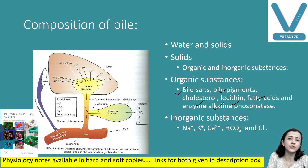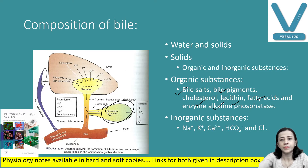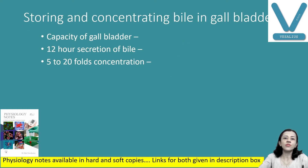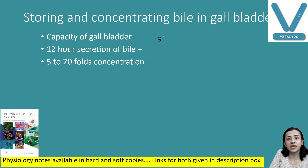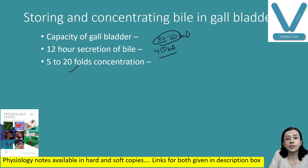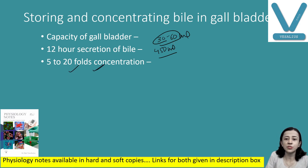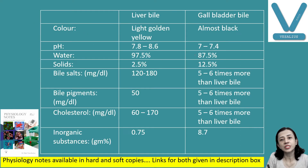Bile produced from the liver gets concentrated in the gallbladder. The role of the gallbladder is to store the bile and concentrate it. Storage capacity of the gallbladder is about 30 to 60 ml. In 12 hours, the liver secretes about 450 ml of bile, so bile is concentrated about 5 to 20 fold in the gallbladder.